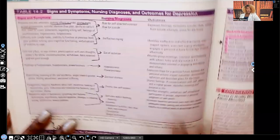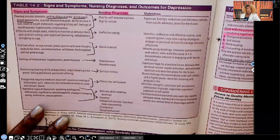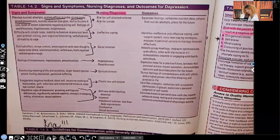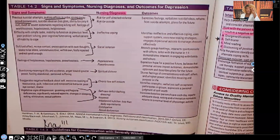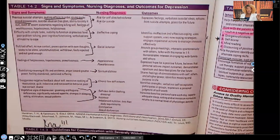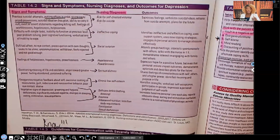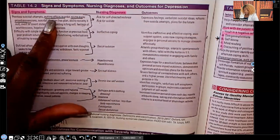Looking at Table 14-2, it covers symptoms, signs and symptoms, nursing diagnoses, and outcomes for depression. I want to focus on the signs and symptoms and the corresponding nursing diagnoses. You need to understand what they are and why we're using them. Let's start with the signs and symptoms of depression.